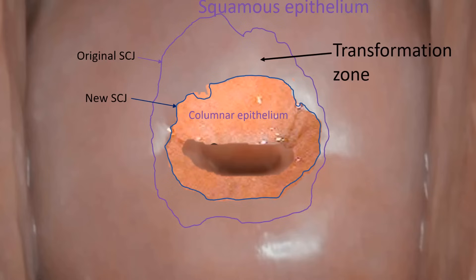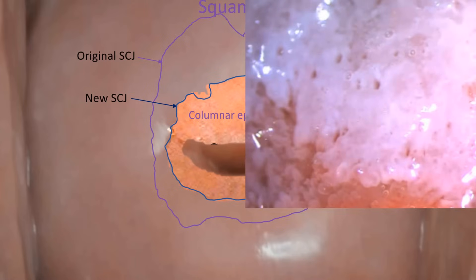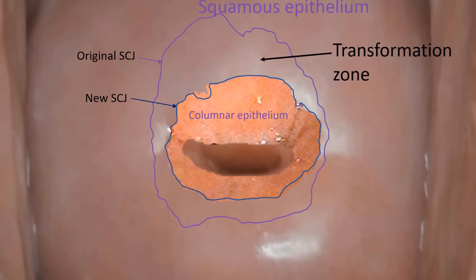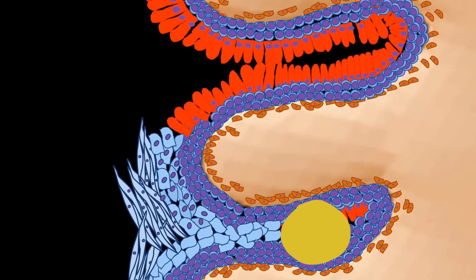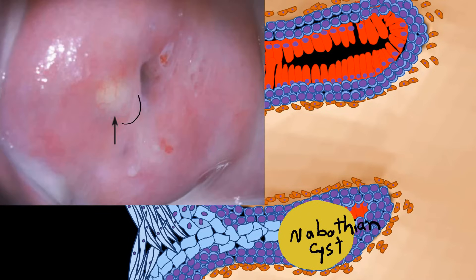The transformation zone is the area where most, if not all, cervical cancers develop. It is characterized by two features: number one, endocervical crypt openings — here is a colposcopic picture of the transformation zone where you can see the openings of endocervical crypts. The second feature is nabothian follicles. During squamous metaplasia, squamous cells may cover functional columnar cells and mucus secretions may accumulate inside, forming a cyst called a nabothian cyst. Clinically it looks like smooth, clear, white or yellow rounded elevations on the surface.